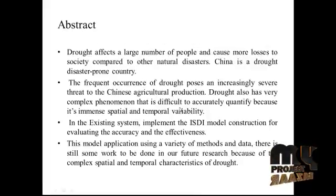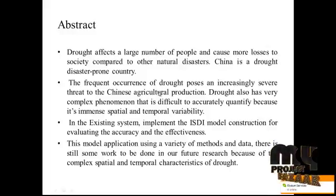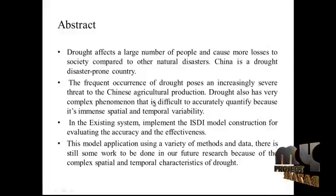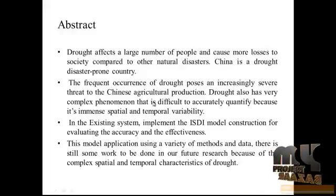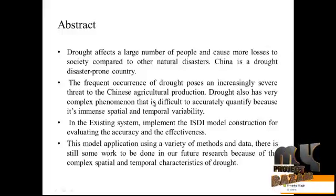Drought affects a large number of people and causes more losses to society compared to other natural disasters. China is a drought-disaster-prone country, and the frequent occurrence of drought poses an increasingly severe threat to Chinese agricultural production. Drought is also a very complex phenomenon that is difficult to accurately quantify because of its immense spatial and temporal variability.